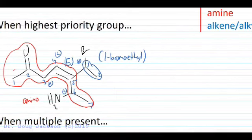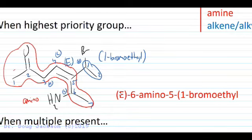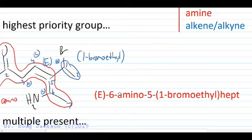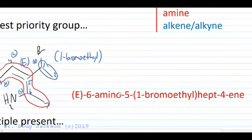So here we have two groups. Alphabetically amino comes first so we have a six amino. But that stereochemistry, let's go ahead and throw that in. Six E-amino and a five in parentheses one-bromo ethyl close parentheses.